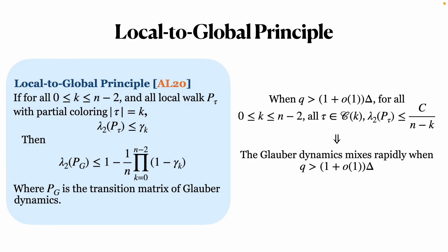The local-to-global principle tells us the relationship between the second largest eigenvalue of local and global walks. Since the global walk on Cn is exactly the Glauber dynamics, we can establish the rapid mixing of it if the local walks have the second largest eigenvalues bounded appropriately.